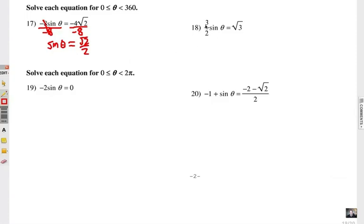On number 18, we're going to multiply each side by two-thirds. And so when those cancel out, sine theta has to be two radical three over three.